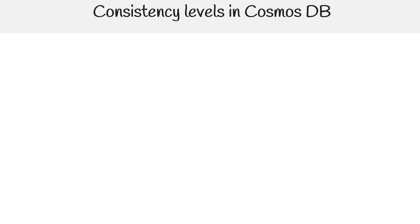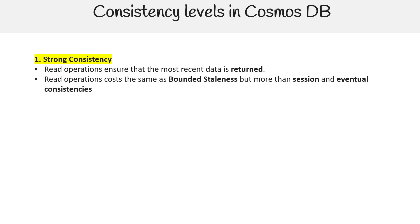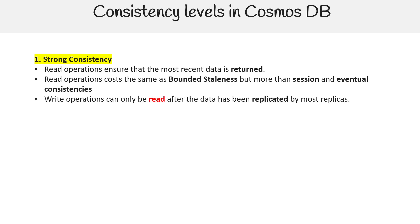For strong consistency, read operations ensure that the most recent data is returned. Read operation costs are the same as bounded staleness, but more than session and eventual consistency. Write operations can only be read after the data has been replicated by most replicas. When they mention costs, it likely refers to the cost to retrieve information — this language comes directly from the documentation.